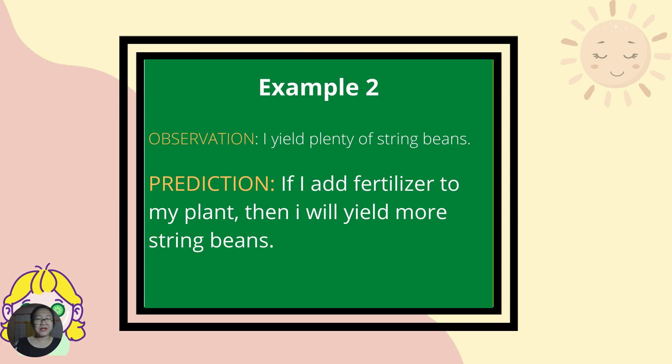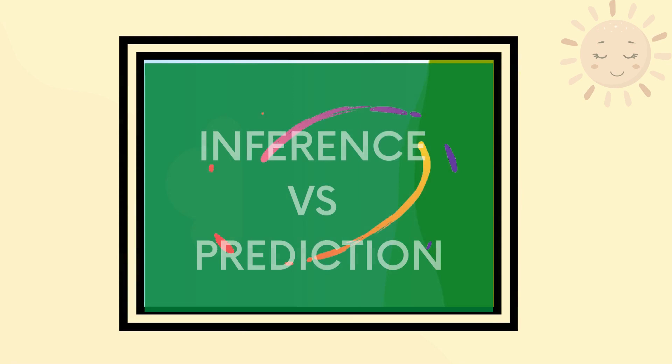Let's have another example. The observation is: I yield plenty of string beans. What's the prediction? If I add fertilizer to my plant, then I will yield more string beans.